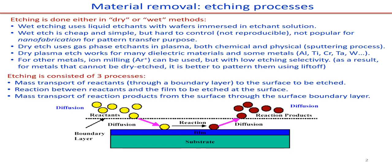Basically, etching consists of three processes. The first step is the mass transport of reactants to the surface to be etched. The second is the reaction between the reactants and the film to be etched. The last is the mass transport of reaction products away from the surface. In this figure, the reactants — for example in wet etching, the chemical agents — slowly diffuse to the film, the reaction happens, and the reaction products are then removed from the surface.